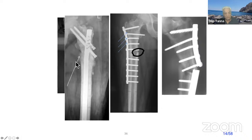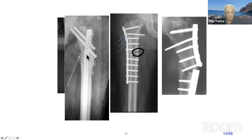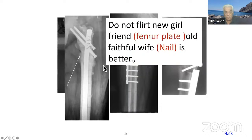I feel medial bone graft is the most important thing in healing of a femur fracture. I have spoken about it innumerable times — healing is always on the medial side, and weight bearing is always on the medial side. So medial graft is more important. Do not flirt around with the new girlfriend — the femur plate — the old faithful wife is the better implant.